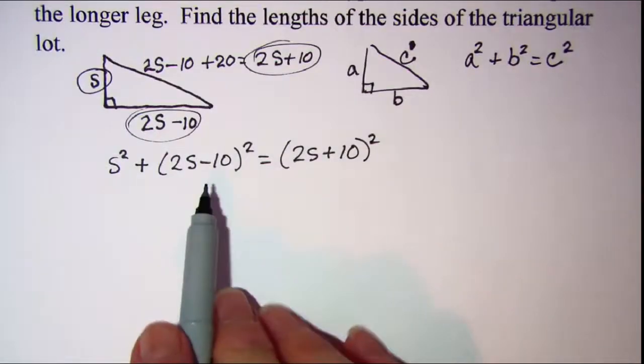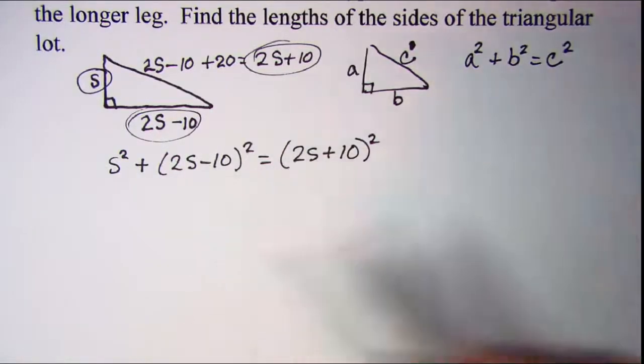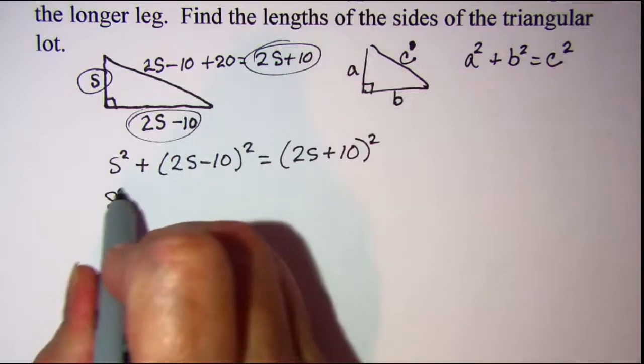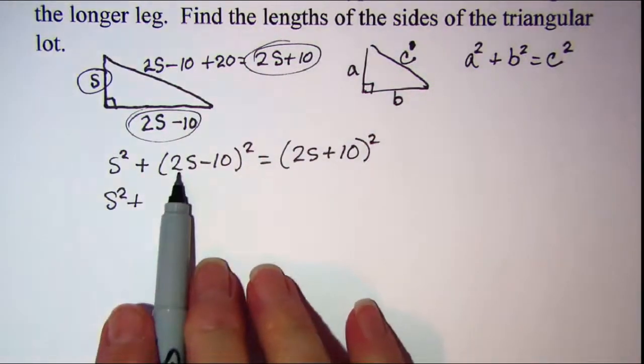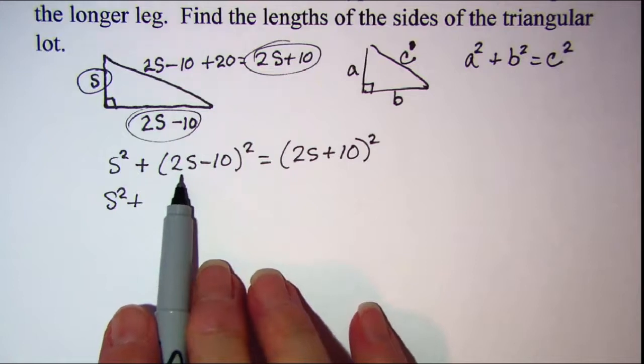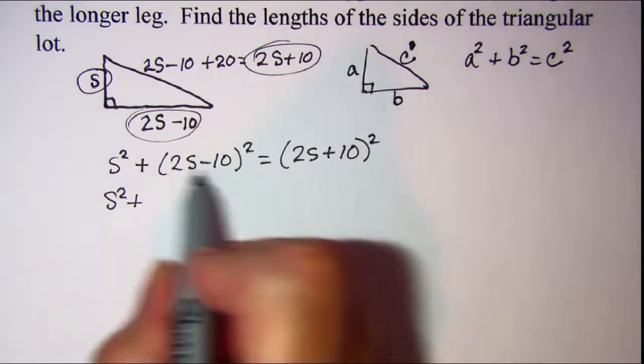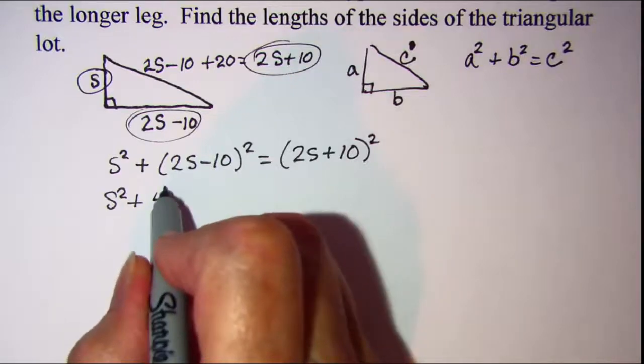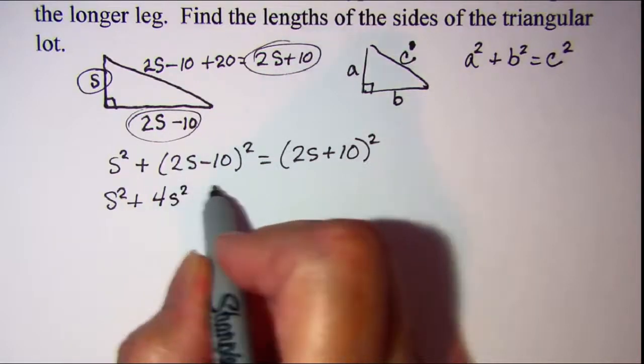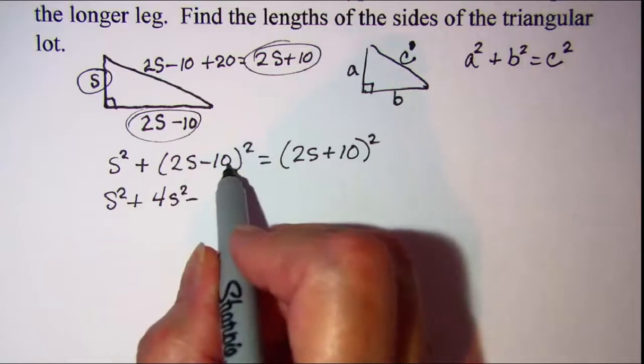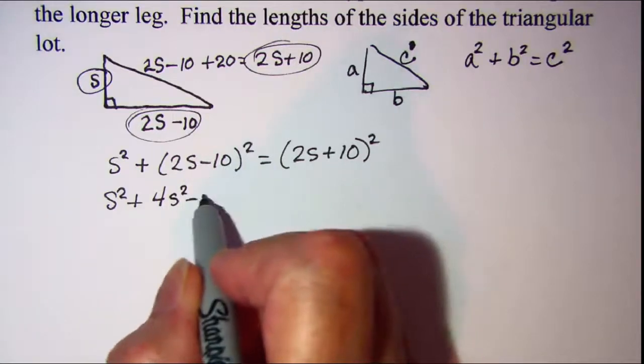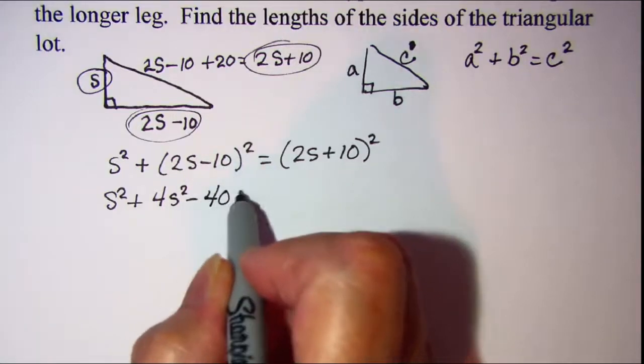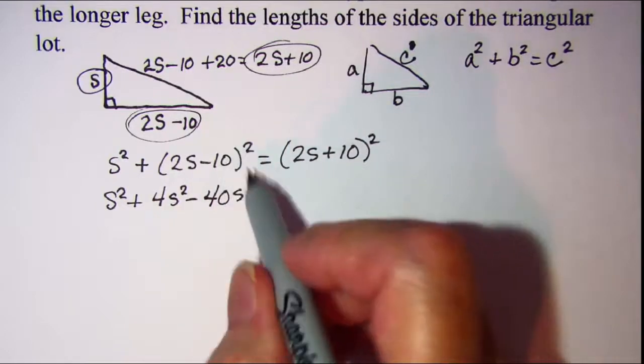Now I'm just going to square these out. s squared plus, and you may want to write this twice, multiply it by itself, and use FOIL. I know that that product when I square this binomial is 4s squared minus, this times this is negative 20s, doubled is negative 40s, and then plus 100.